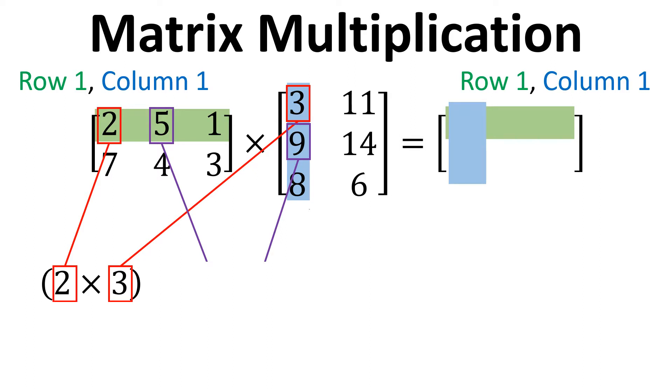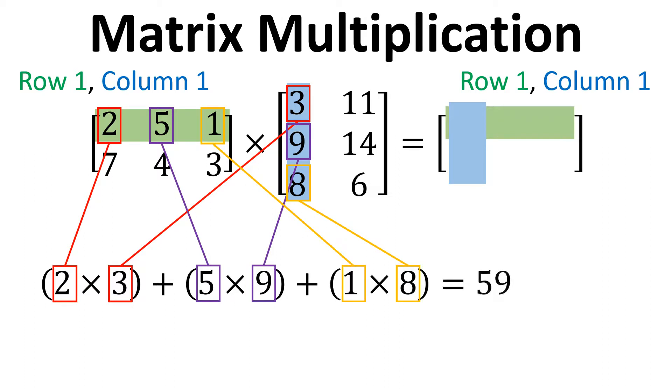We then do the same thing for the next two elements which is 5 and 9. And then for the final element there, element 3 in the first row and element 3 in the first column for the two matrices respectively. Multiply those together and we get a total of 59. And so that is what actually goes in to the answer matrix here for row 1, column 1.